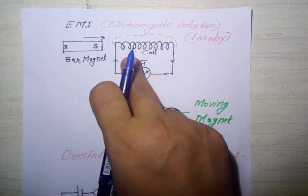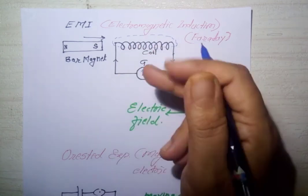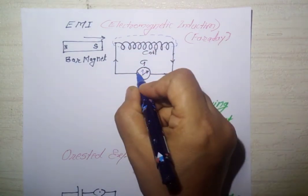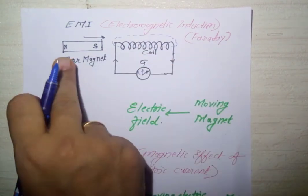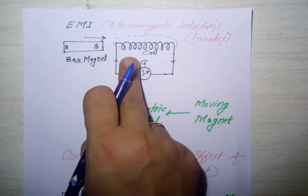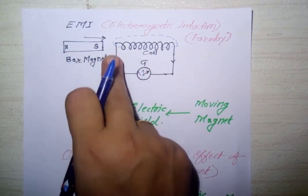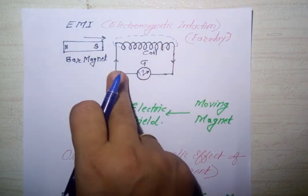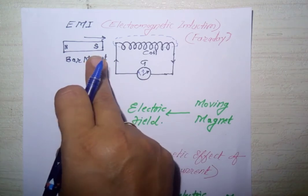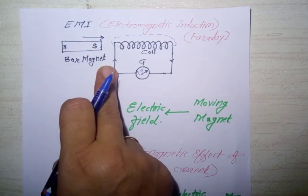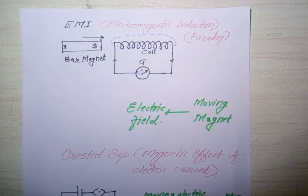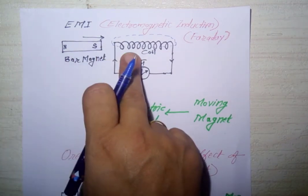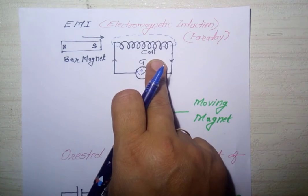If we move the magnet away from the coil, current again flows through the coil but the direction of current is reversed. When we bring the magnet towards the coil, current flows in one direction; when we move the magnet away, the direction changes to anti-clockwise. If we move the magnet very fast, the current in the coil increases.